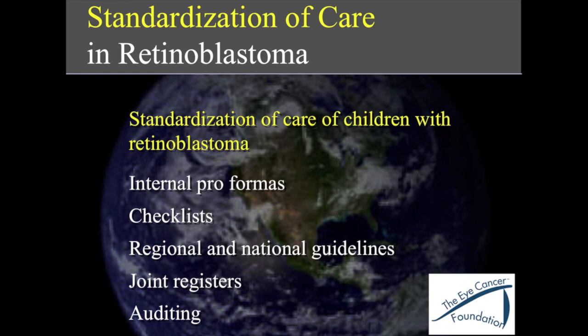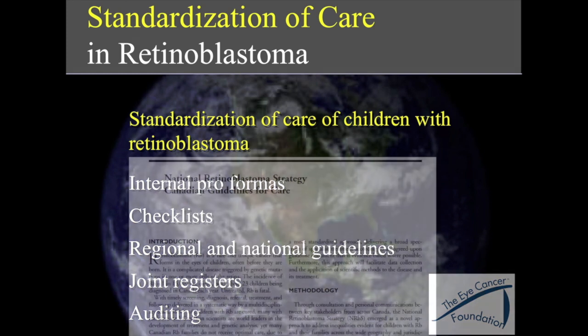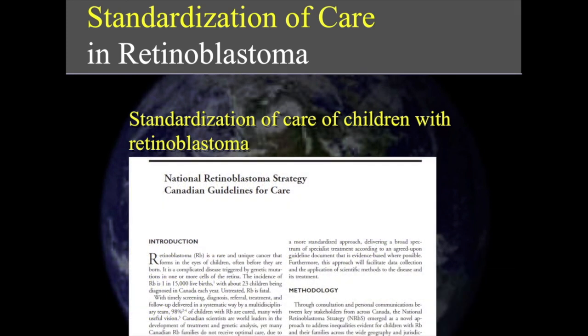You can have separate checklists for different procedures — for example, cataract has a separate checklist because it's such a common procedure. Then you can read our national guidelines. I might point you to the National Retinoblastoma Strategy and the Canadian guidelines, which are really very detailed. Any guidelines will need to be adjusted to your local requirements, because there will be differences in the healthcare system and many other aspects of care for patients with retinoblastoma.